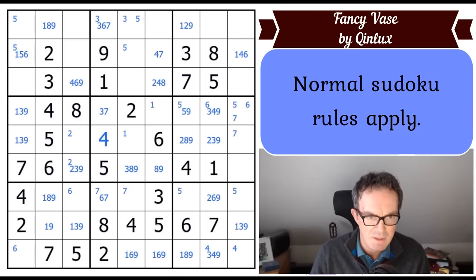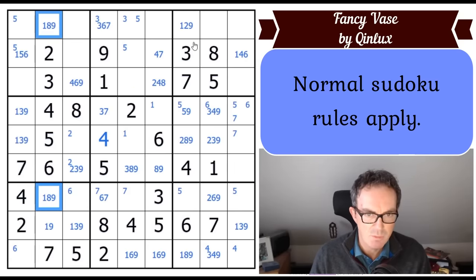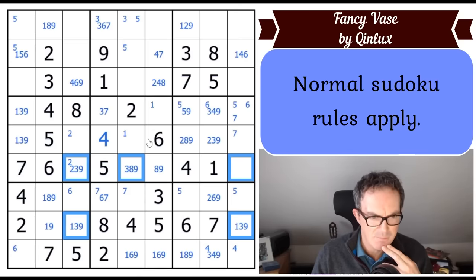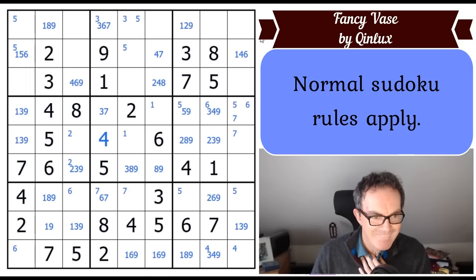Now, we could start looking for X-wings and the like. My patented method for doing that is to try and find digits that are locked into only two places in any row or column. So for example, eight in column two can only go in one of two positions. And I don't think we can make use of that.